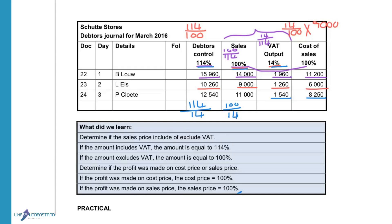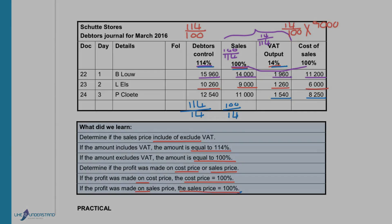What did we learn? First, determine if the sales price includes or excludes VAT. If the amount includes VAT, it equals 114%. If the amount excludes VAT, it equals 100%. Second, determine if the profit was made on cost price or on sales price. If profit is on cost price, the cost price equals 100%. If profit is on sales price, the sales price equals 100%.